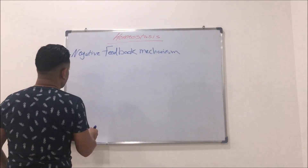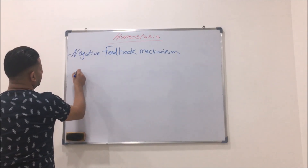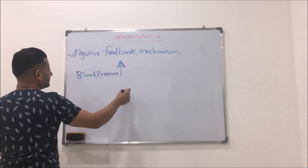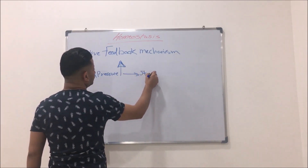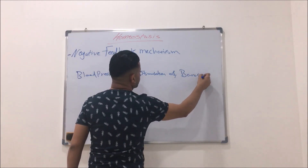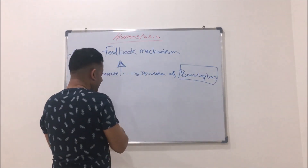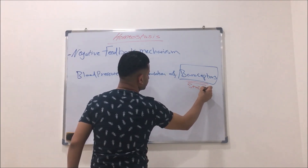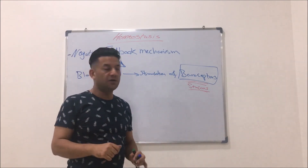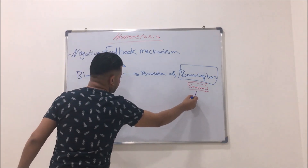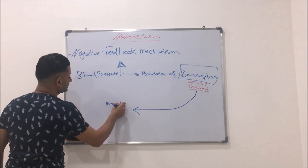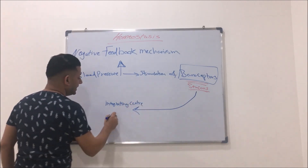Let's imagine the whole scenario. When blood pressure increases, this will cause stimulation of baroreceptors. The baroreceptors are the sensors and they are found, as we have said, in the bifurcation of carotid arteries or the aorta. These will send signals to the integrating center in the medulla oblongata.